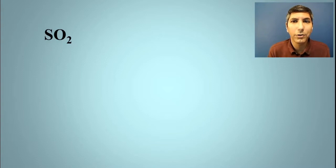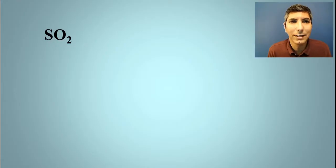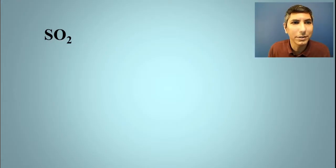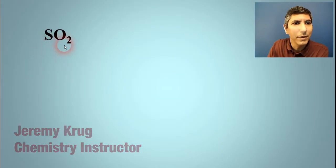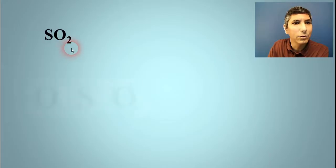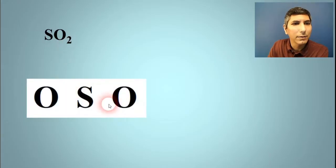As we move on to Unit 2, Section 6, we're going to be refining our understanding of Lewis electron dot diagrams. We're going to do a few more examples here. Here we have sulfur dioxide, and we're going to start with sulfur as our central atom, with two atoms of oxygen surrounding it.